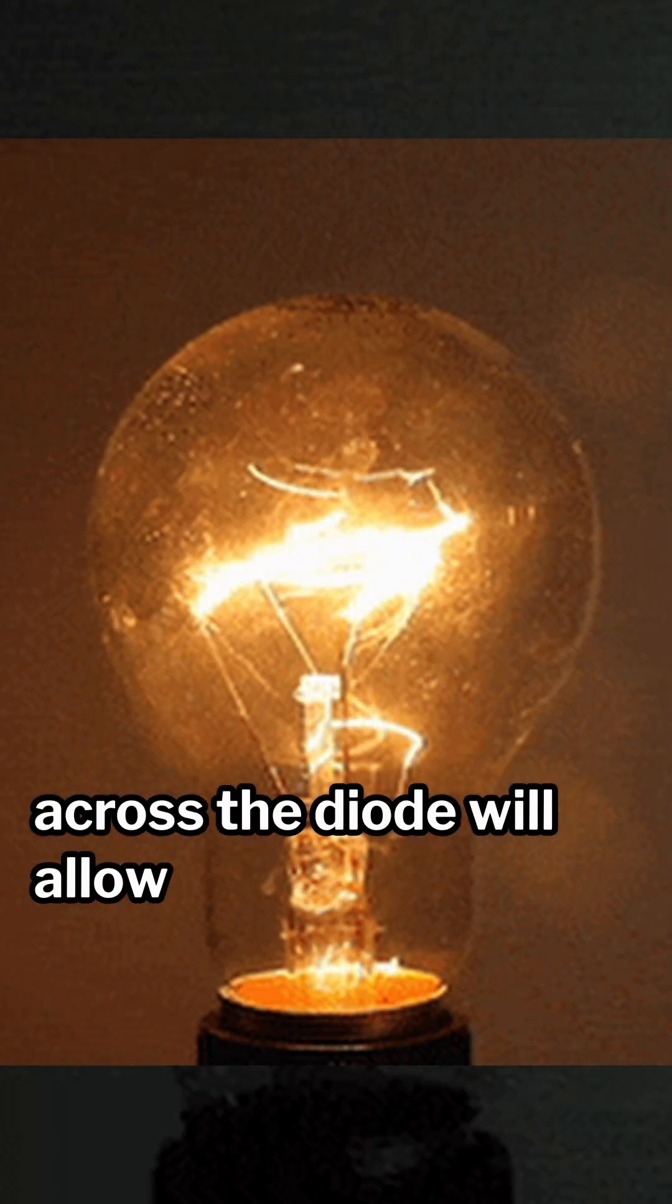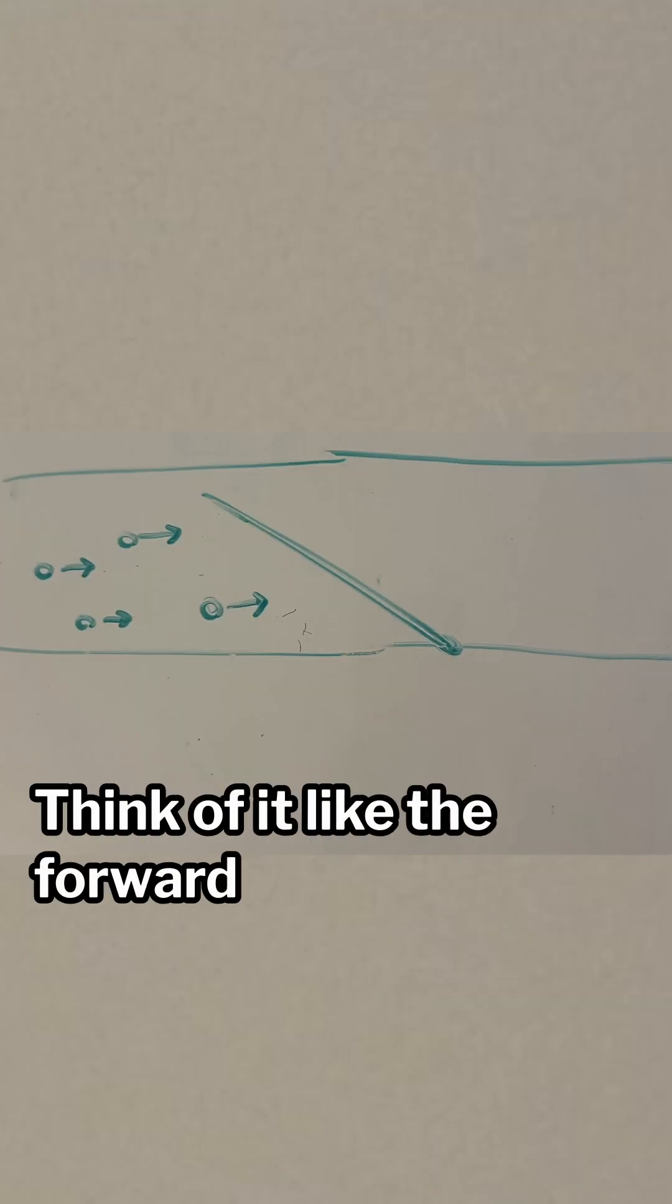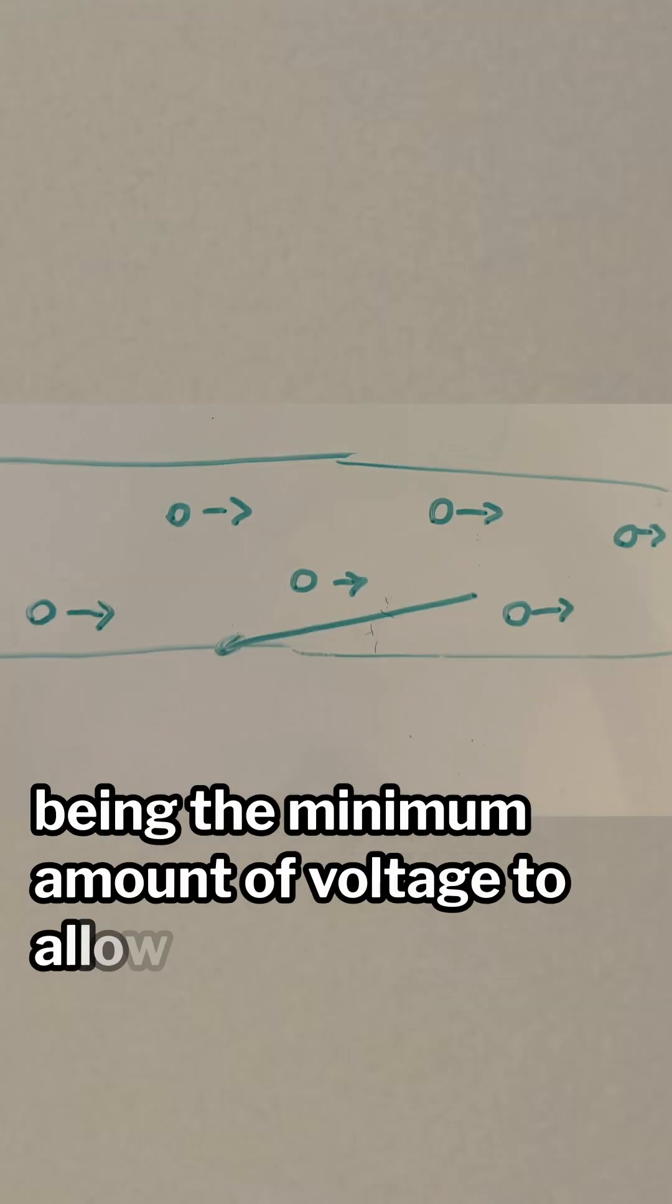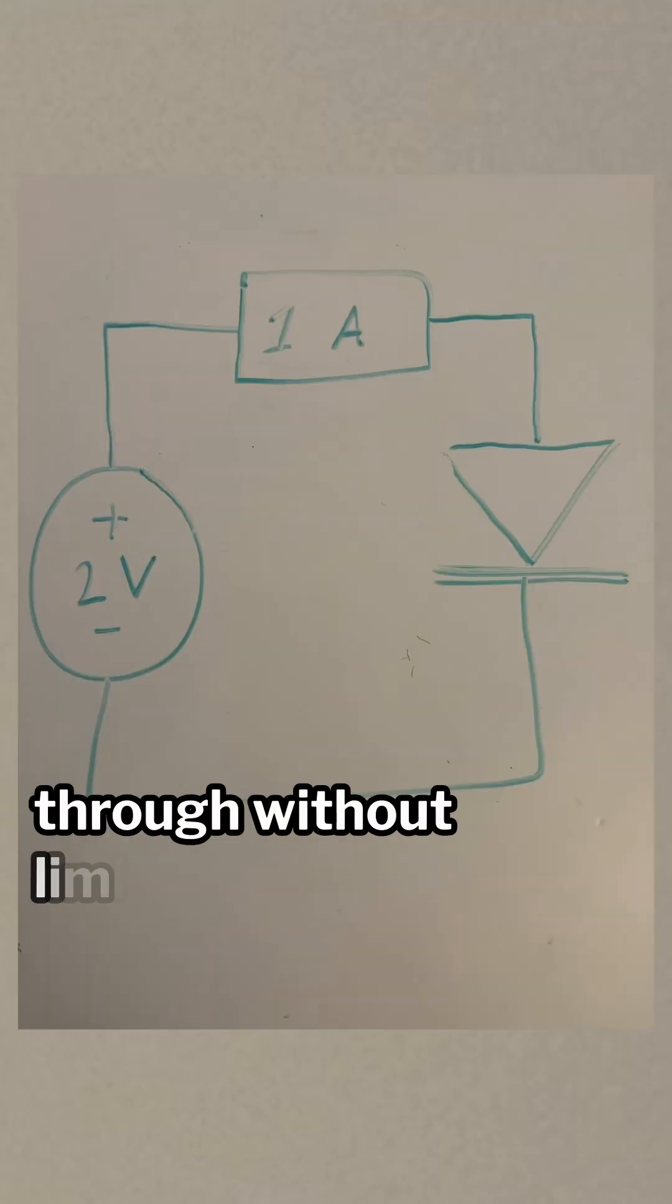After you reach the forward voltage, any greater voltage across the diode will allow dramatically more current to flow. Think of it like the forward voltage being the minimum amount of voltage to allow the diode to be on. Any more voltage would just let current pass through without limiting it.